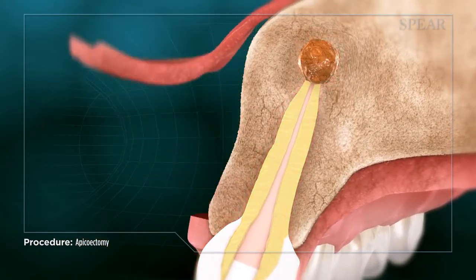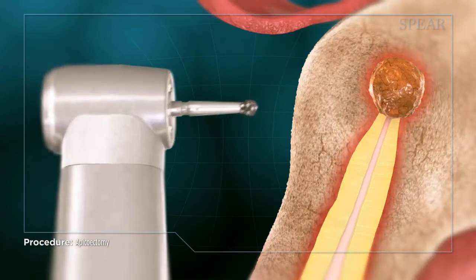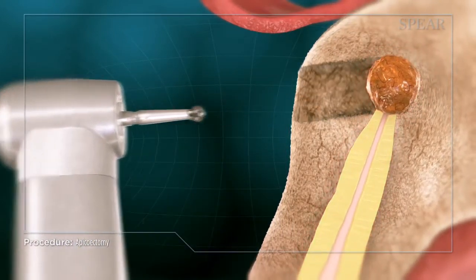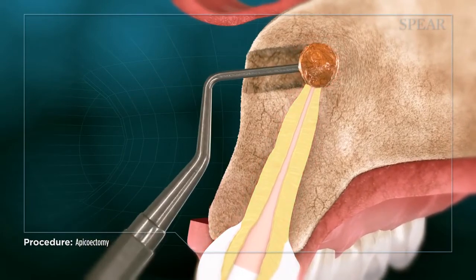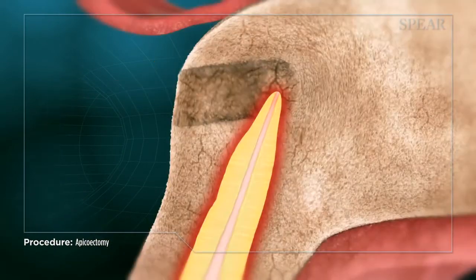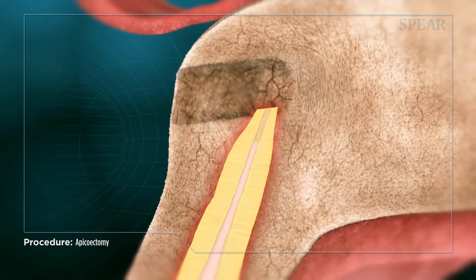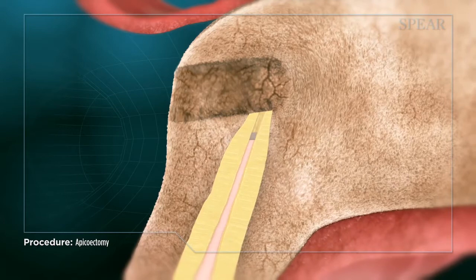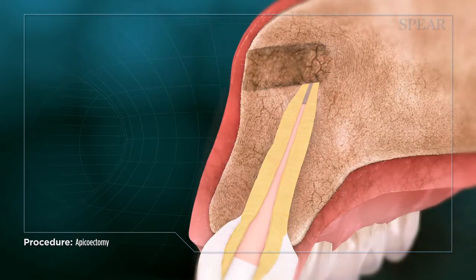An apicoectomy involves your doctor accessing the infection through a small opening created above the tooth. The infected tissue is then removed from the area. Next, the tip of the root is slightly reduced to remove any additional infection, and then the opening is cleaned and filled with a special material. Once this is complete, the area is closed up and left to heal.